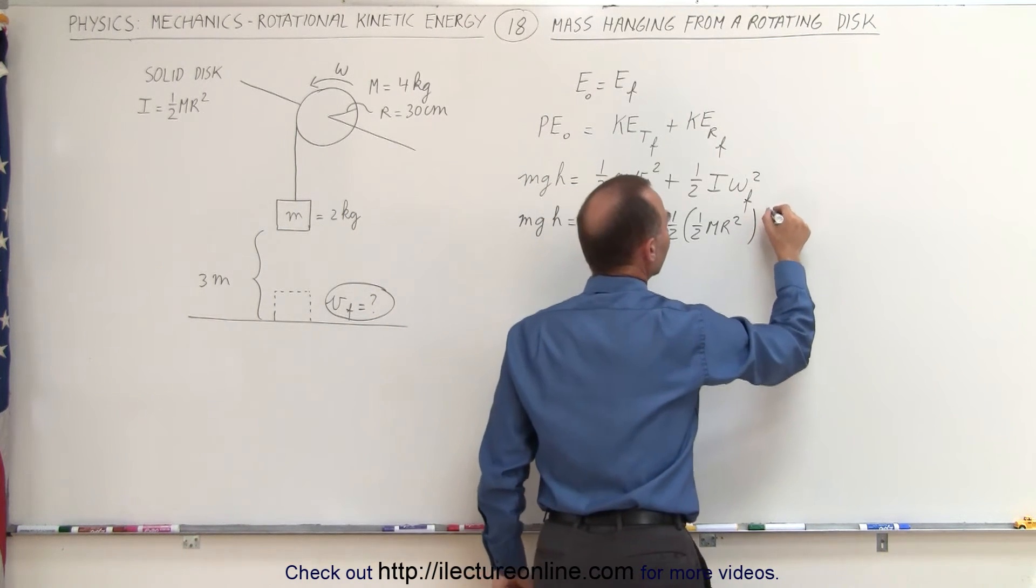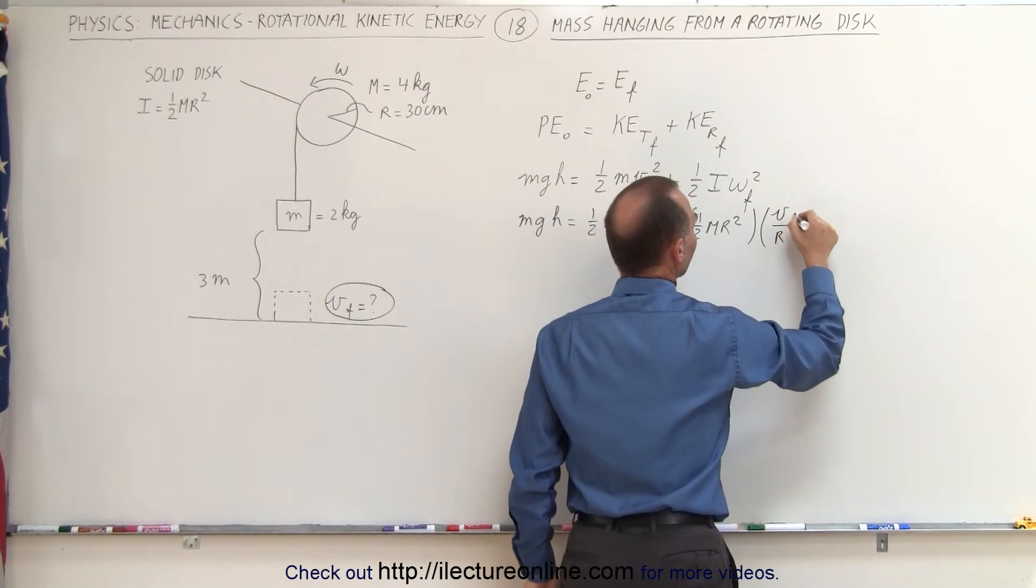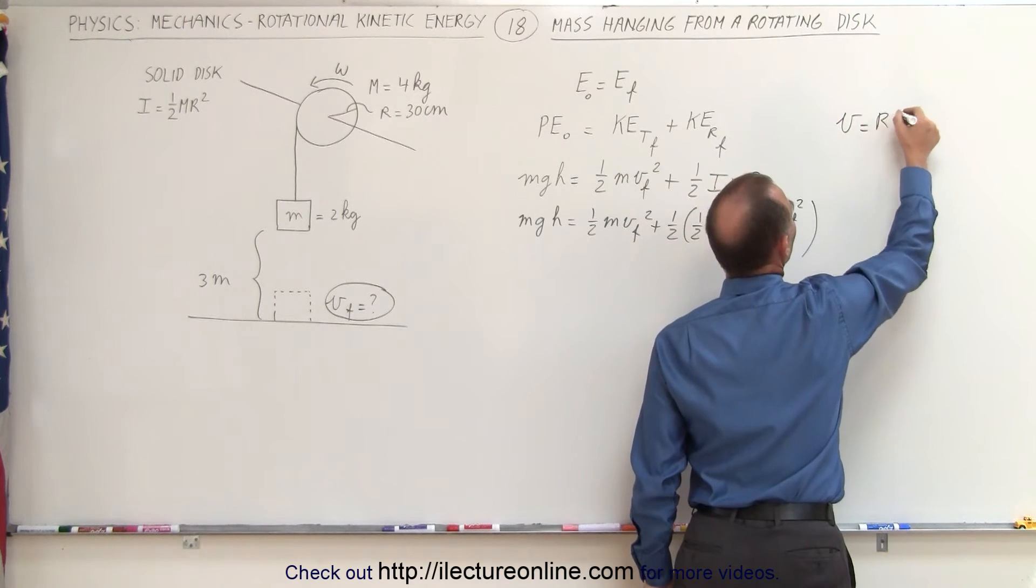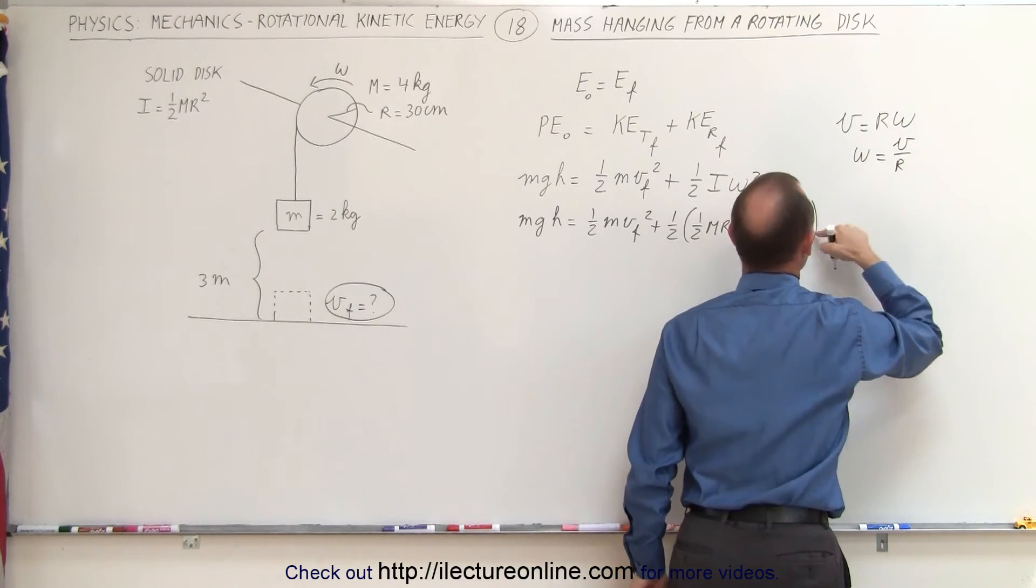And then we multiply that by omega final, which can be written as v over r. Make that v final, and of course we have to square that. Remember that v is equal to r times omega, therefore omega is equal to v divided by r, and that's where that comes from.